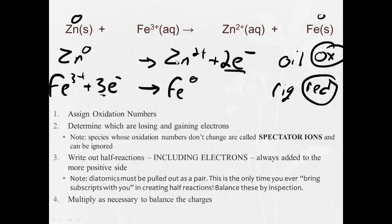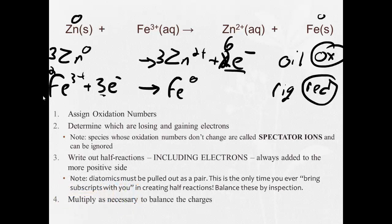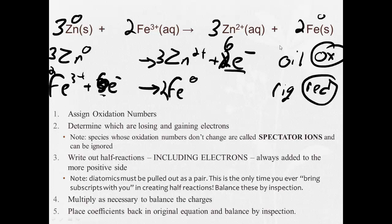Alright. Now I have to multiply. I have a three and a two. So I gotta multiply this by three, three, three, six. I'll multiply this by two. Two, two, three times two is six, two. So now I have to take these numbers and put them back in here. Put a three in front of the zinc and a three in front of the zinc. Put a two in front of the iron and a two in front of the iron. And a two in front of the iron. And now we are balanced.